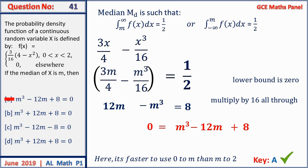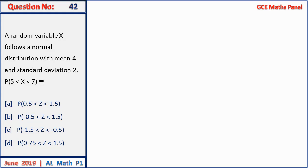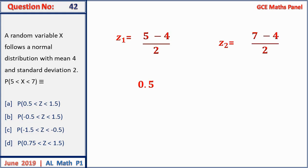Question 42: X follows a normal distribution with mean 4 and standard deviation 2. Find P(5 < X < 7). Standardizing: z₁ = (5 − 4)/2 = 0.5, z₂ = (7 − 4)/2 = 1.5. The required probability is P(0.5 < Z < 1.5). Answer A.